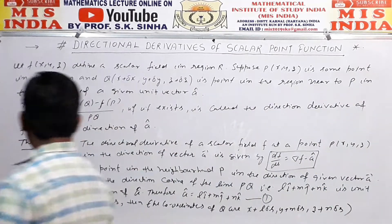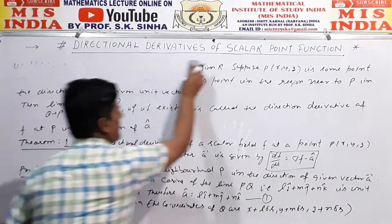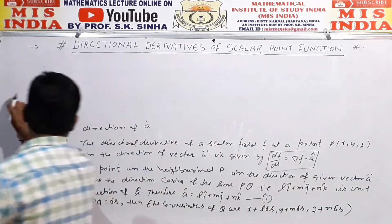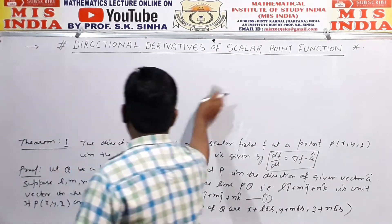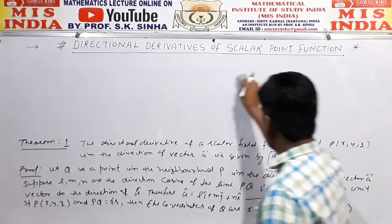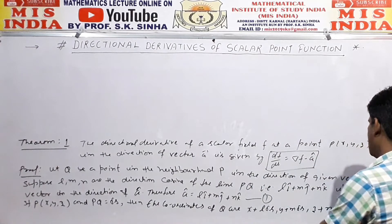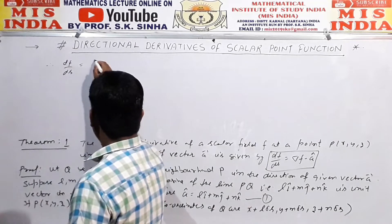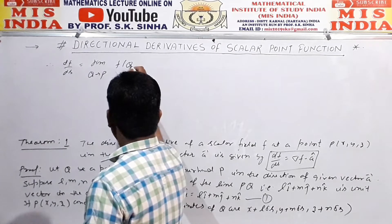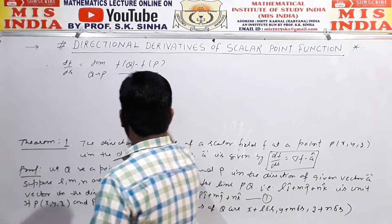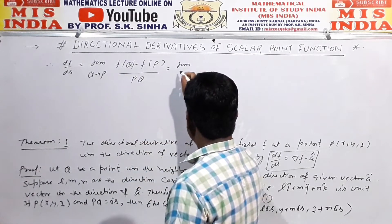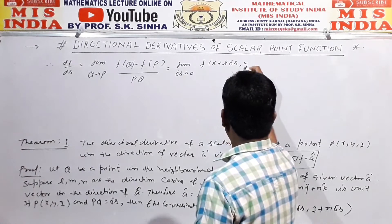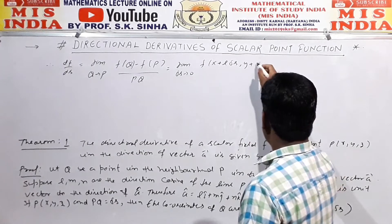Therefore, df/ds = limit as Q approaches P of f(Q) minus f(P) divided by PQ = limit as Δs approaches 0 of [f(x + lΔs, y + mΔs, z + nΔs) minus f(x,y,z)] divided by Δs.